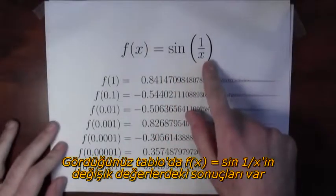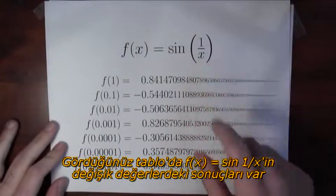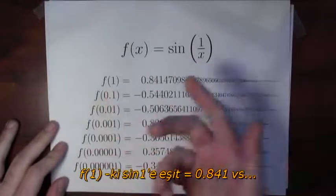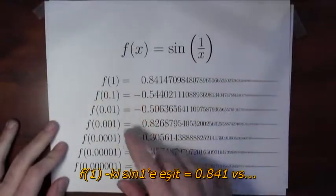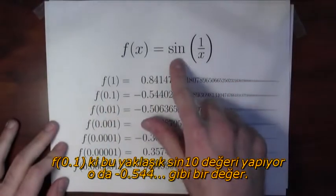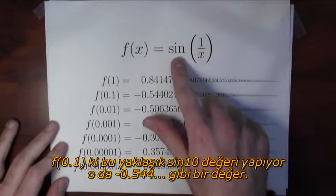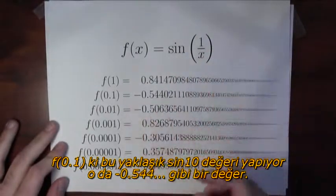So here's a table of values of the function f(x) = sin(1/x). f(1), which is really sine of 1, is like 0.8. f(0.1), which is really sin(1/0.1), sin(10), is like negative 0.5.